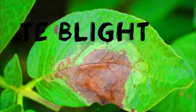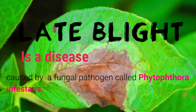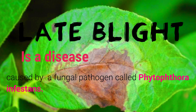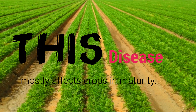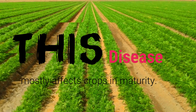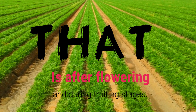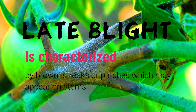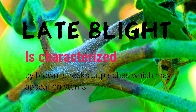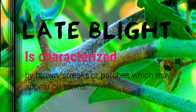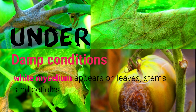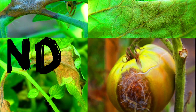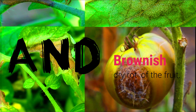On to late blight. Late blight is a disease caused by a fungal pathogen called Phytophthora infestans. This disease mostly affects crops in maturity, that is after the flowering and during fruiting stages. Late blight is characterized by brown streaks or patches which may appear on stems. Under damp conditions, white mycelium appears on leaves, stems, and petioles, and brownish dry rot of the fruit.